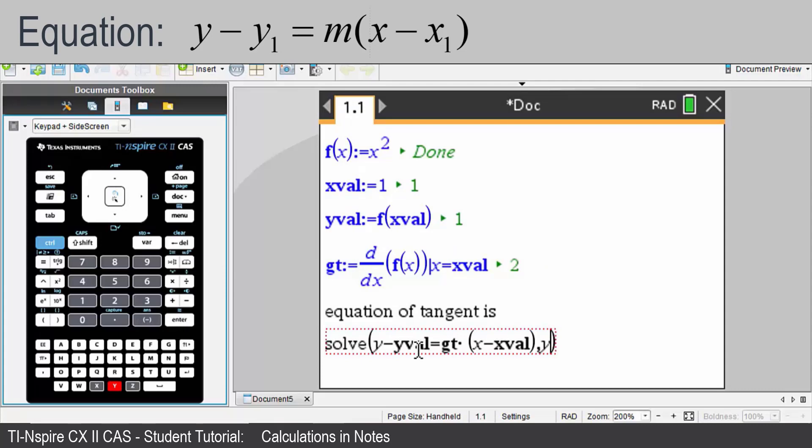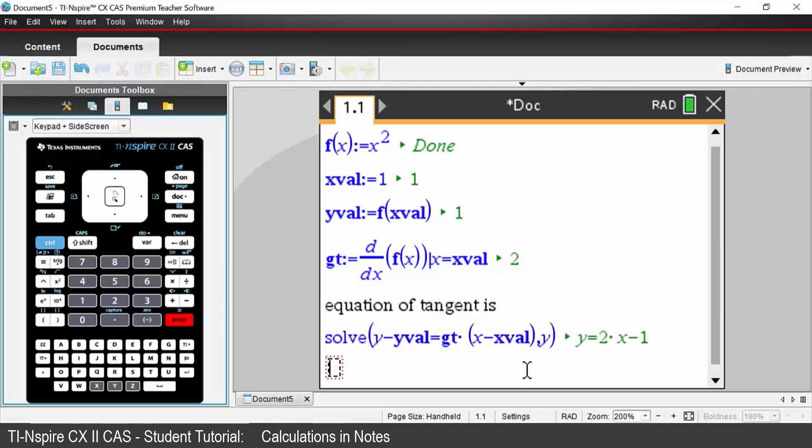And we're going to solve that for y. So what this is doing is this is just the point gradient formula and it's going to solve the point gradient formula for y. We'll press enter and the result is the equation of the tangent.